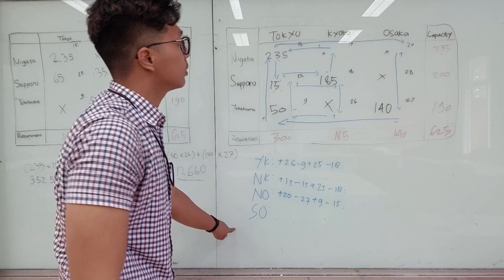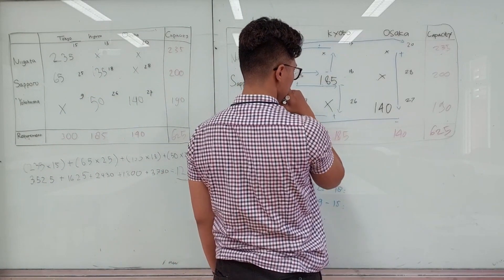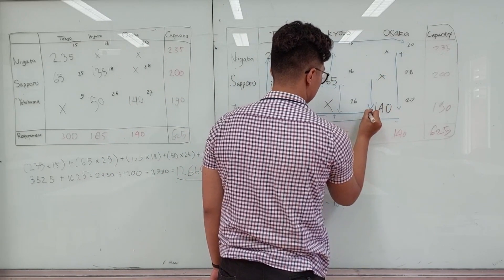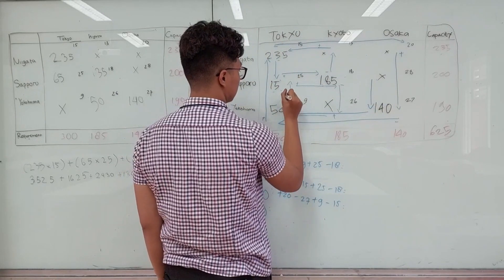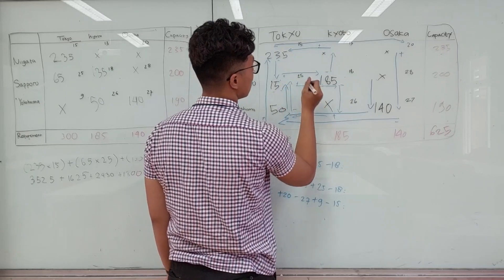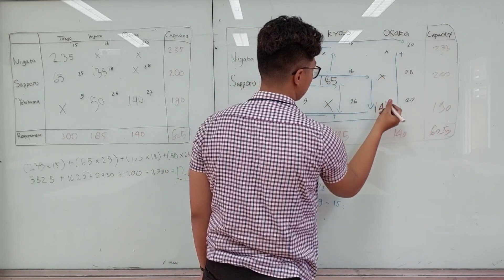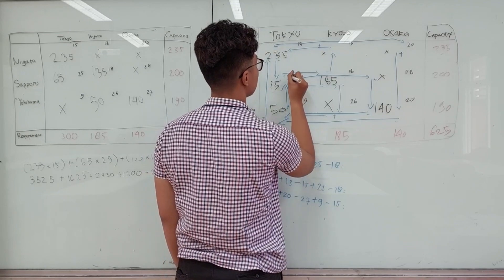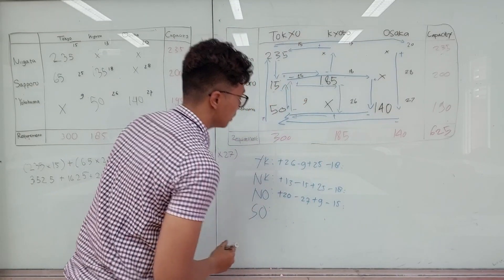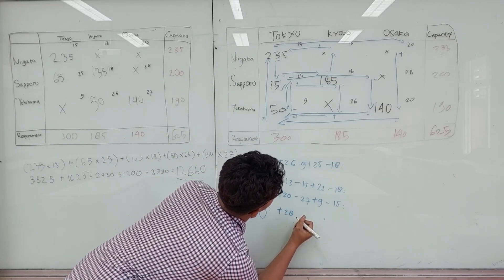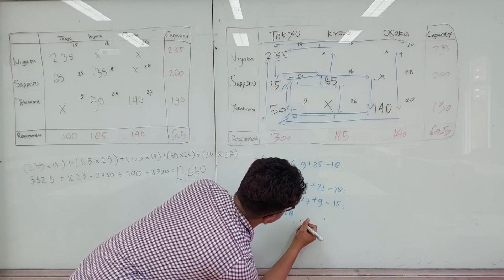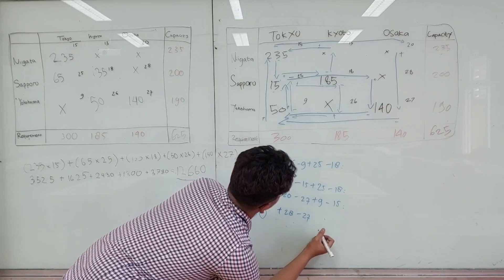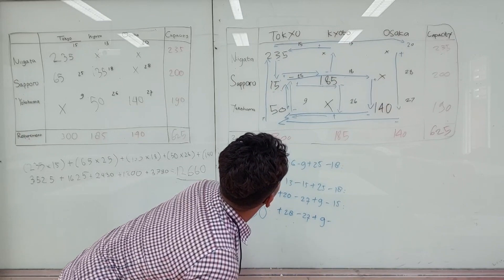And the last one is Sapporo to Osaka. Let's start from here, and we go here again. The symbols are plus and minus. So it would be plus 28, minus 57, plus 9, and minus 25.